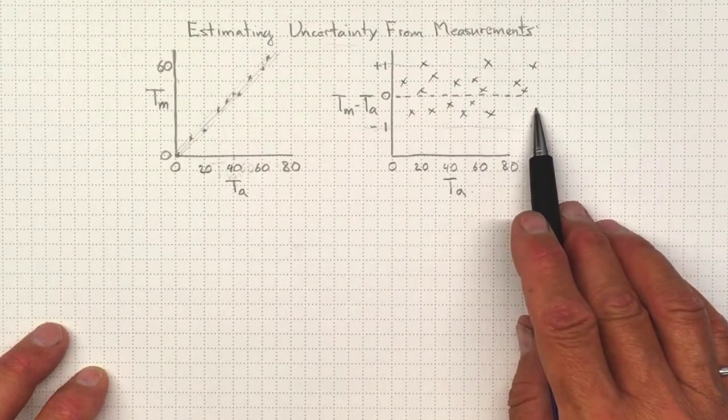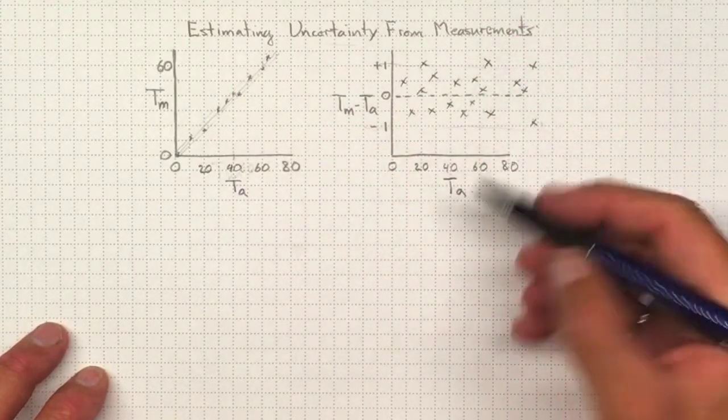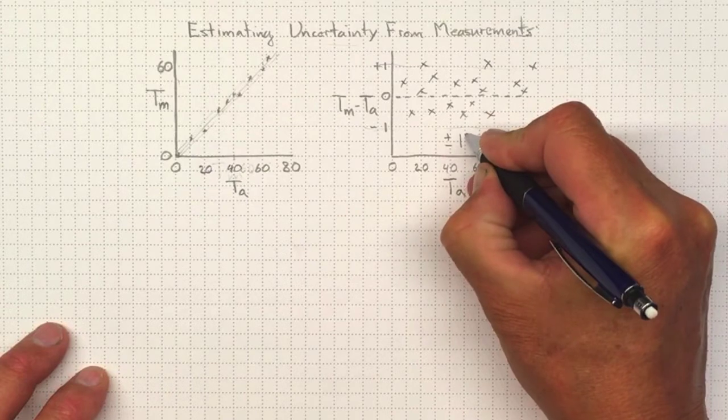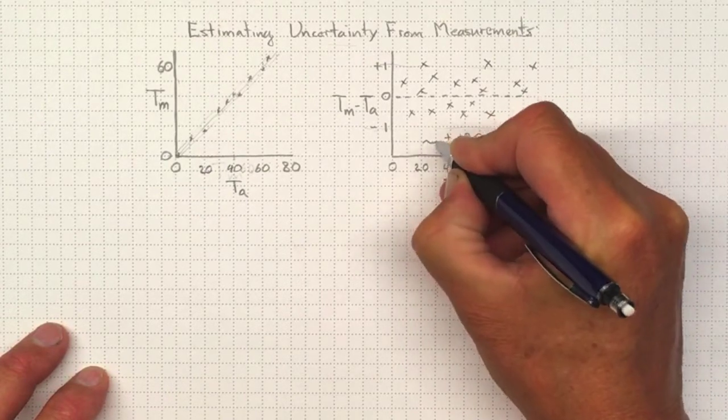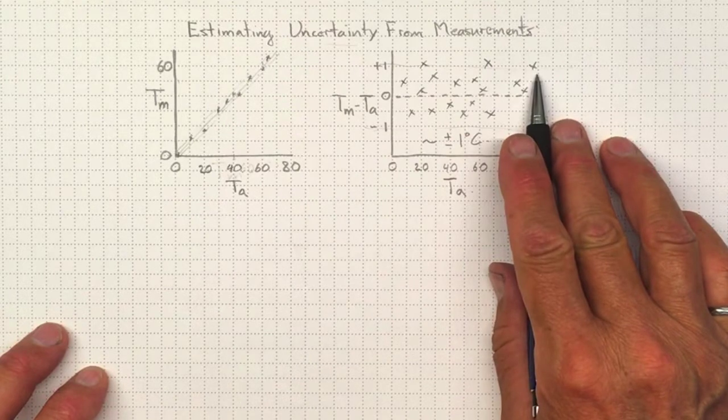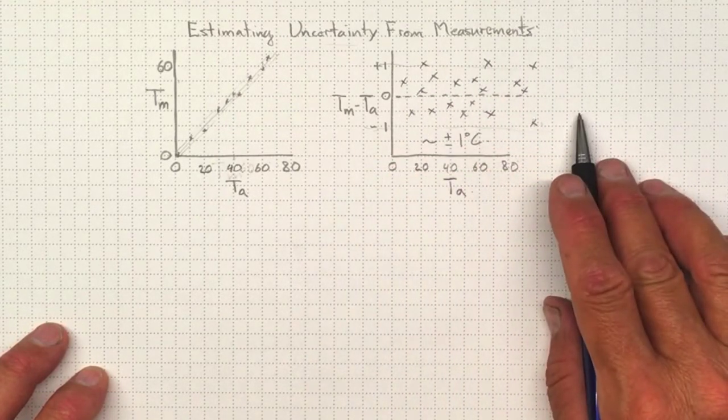So just looking at a graph like this, it'll let me say, eyeball, this is about plus or minus one degree Celsius. And very often that's accurate enough. It tells you roughly how good your measurements are.